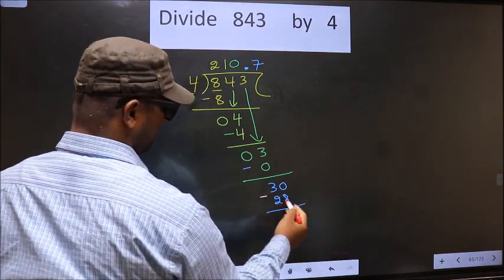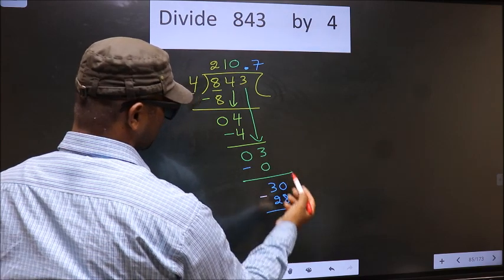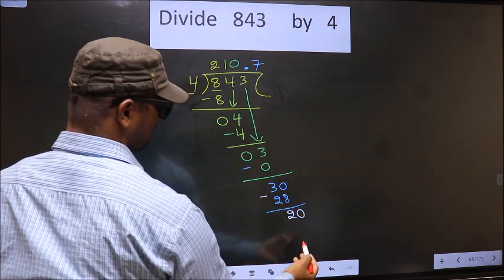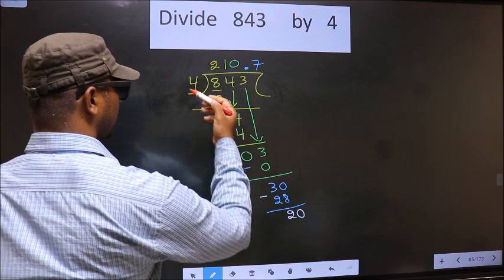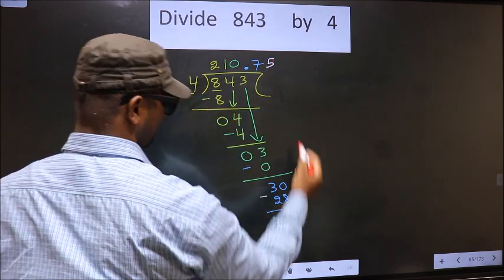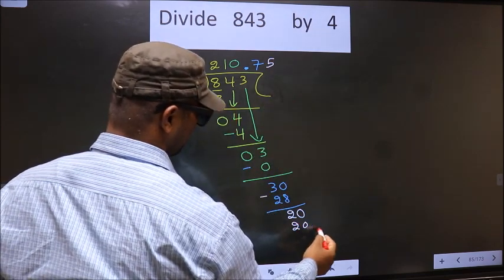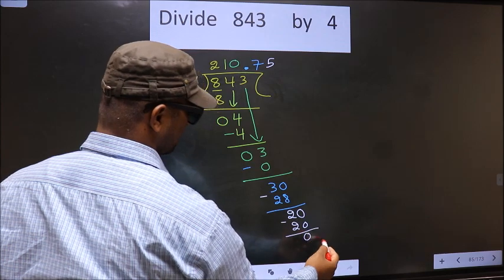Now, you subtract. You get 2. Decimal is already there, so you put 0. When do we get 20 in 4 table? 4 fives, 20. Now you subtract. You get 0.